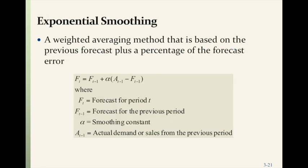Exponential smoothing is a weighted average method based on the previous forecast plus a percentage of the forecast error. You take the forecast for the current period and the forecast for the previous period, apply a smoothing constant, and combine them. This smooths the values so that if your error was really bad last time, it corrects it for this time.